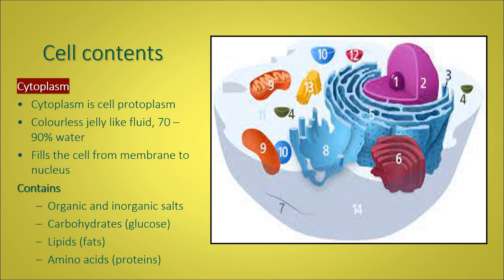It contains organic and inorganic salts, carbohydrates, lipids, amino acids, which are proteins. Carbohydrates are glucose, so these are floating around in the cytoplasm. As they have just passed through the cell wall into the cell, they'll be floating in the cytoplasm until they make up their mind where they're going, what part of the cell they need to go to.